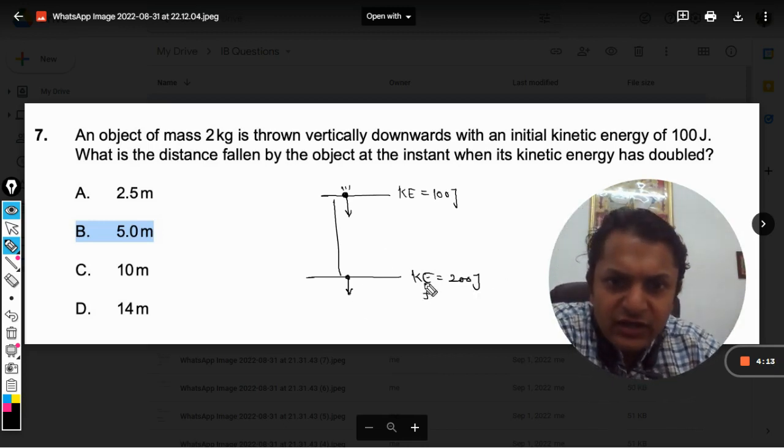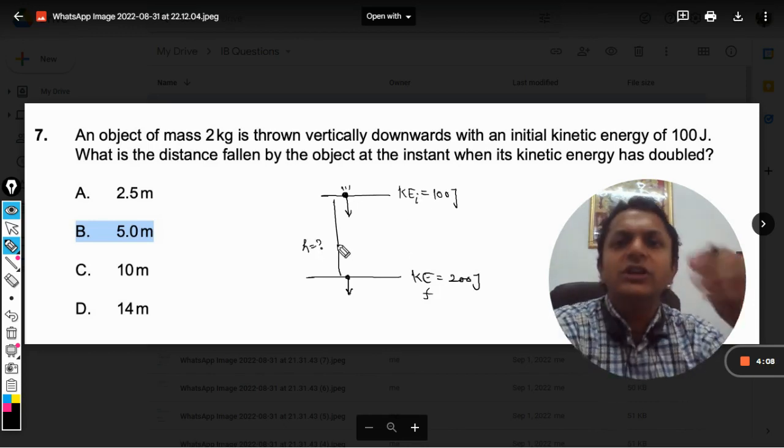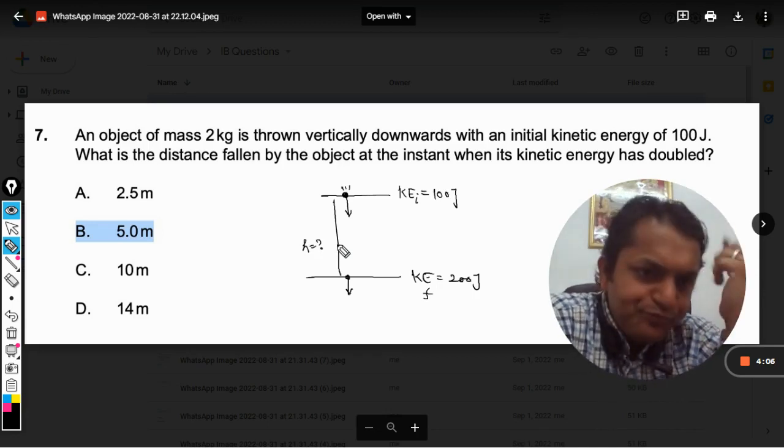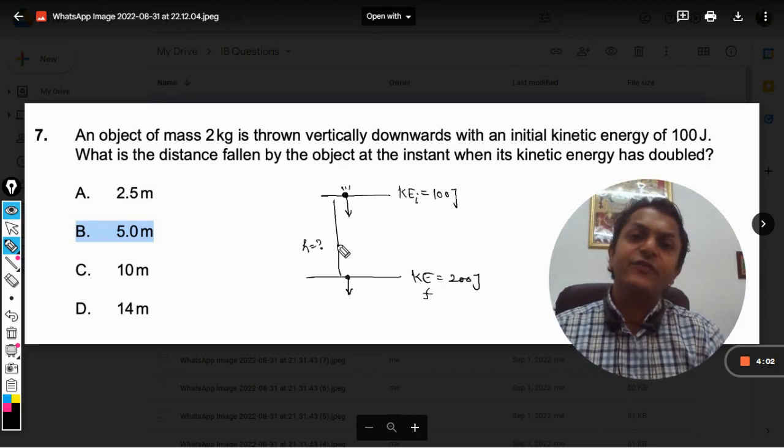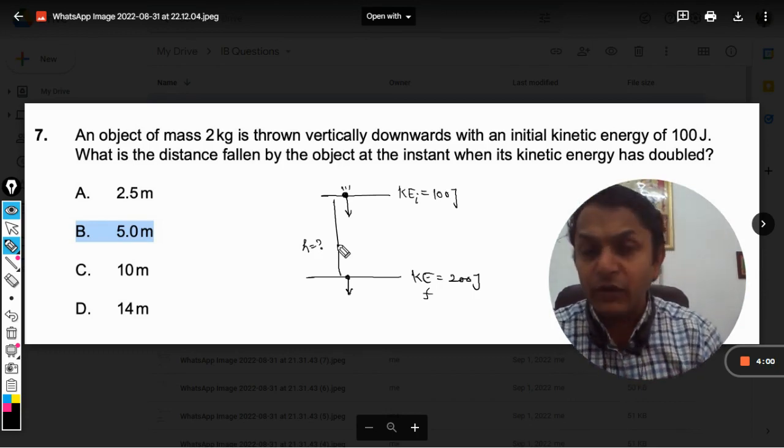Okay, so this is final and this is initial. Now the question is by what height should the object have to fall? This is a very simple concept. This question is from the topic of work, energy, power.